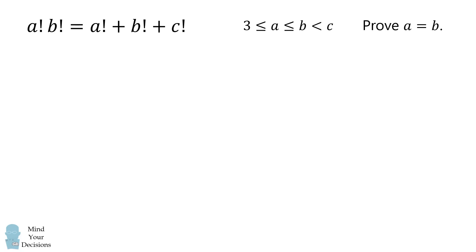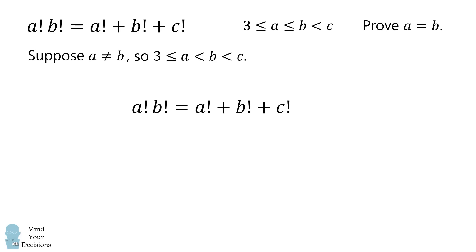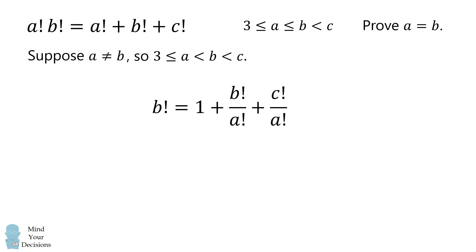Now let's show that a equals b. To do that, we'll assume the opposite — that a is not equal to b — meaning 3 ≤ a < b < c. We go to our original equation and divide both sides by a factorial. This simplifies to: b factorial equals 1 plus b factorial over a factorial plus c factorial over a factorial. The right-hand side is a sum of integers because b and c are greater than a. Since b is at least 3, b factorial is an even number, so the entire right-hand side must be even.